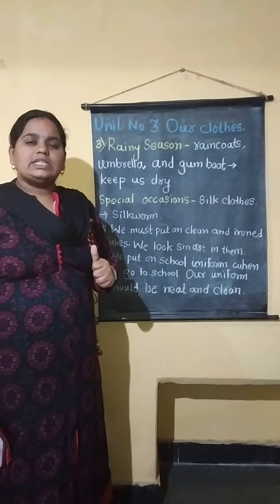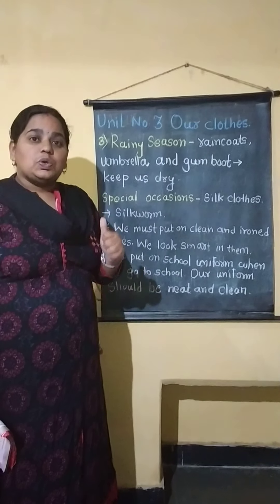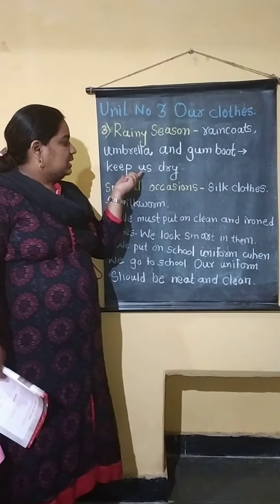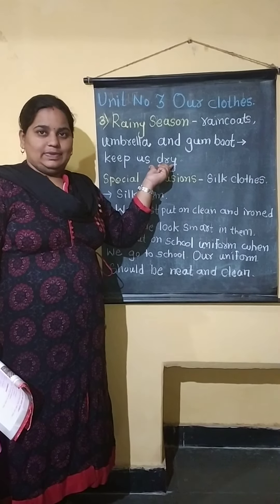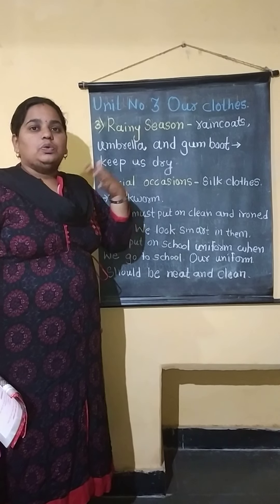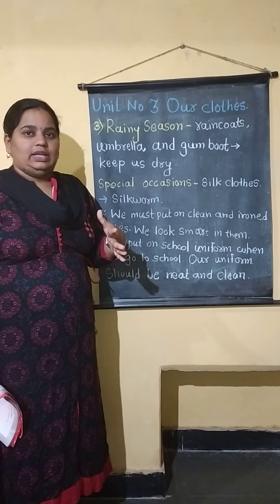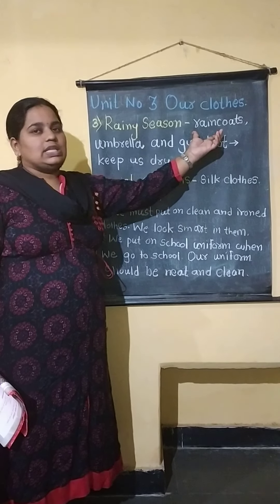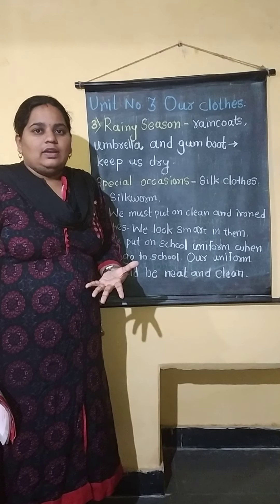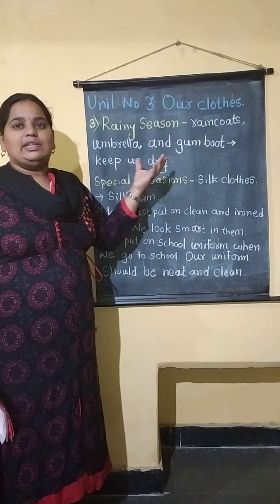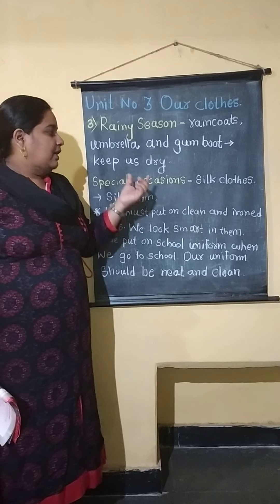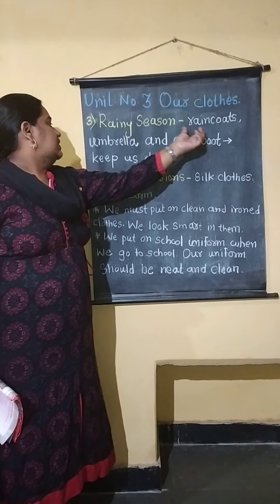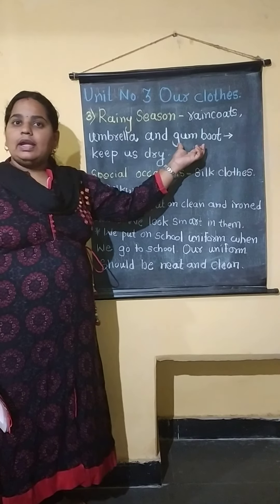Why will we use these things, children? We use them to keep us dry. Outside it will rain, and to keep us dry we use these things. If we don't use these things, we will become wet. So to remain dry, we use raincoats, umbrellas, and gumboots.